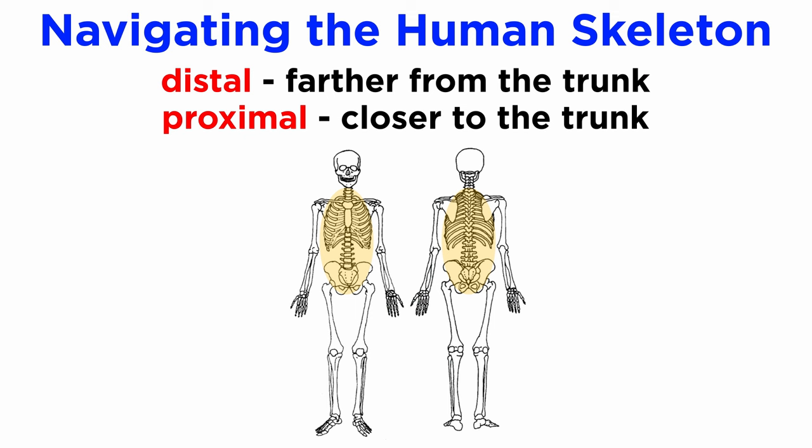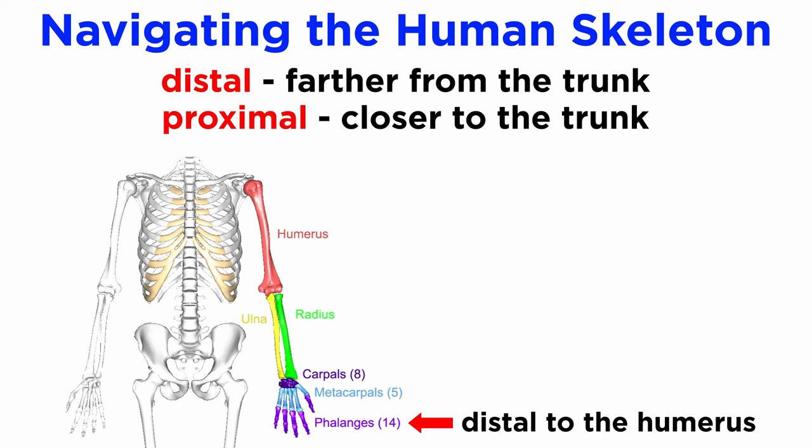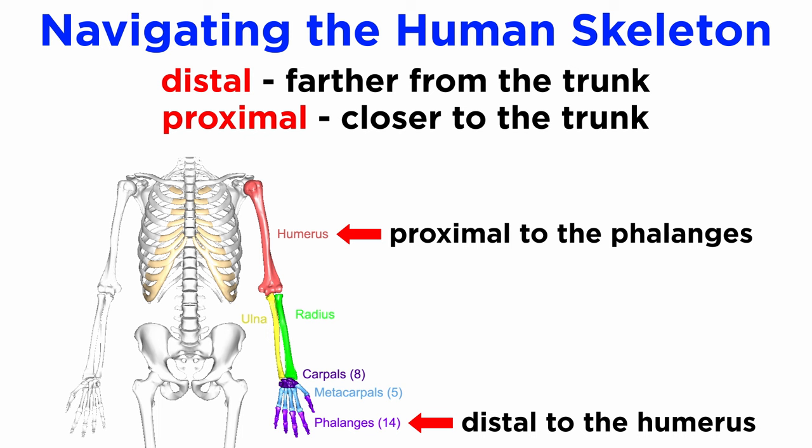Distal and proximal refer to a bone's position or surface in the limbs with relation to the trunk. The phalanges, or fingers, are distal to the humerus, or upper arm. Likewise, the humerus is proximal to the phalanges.